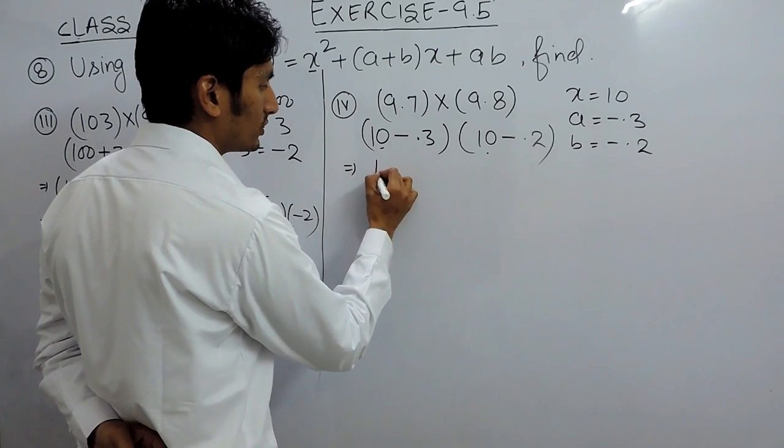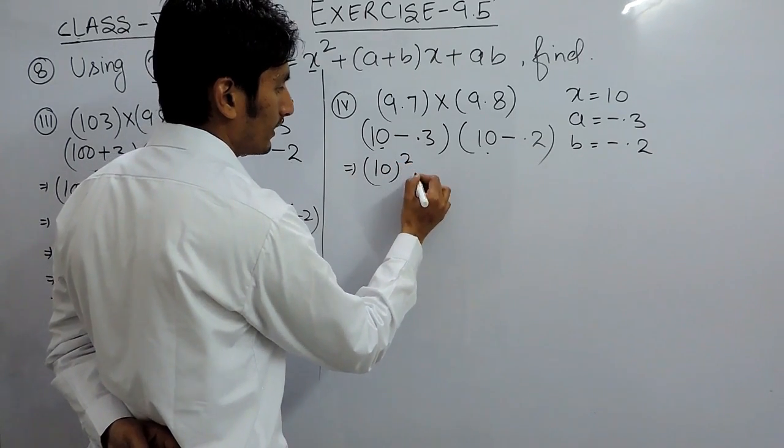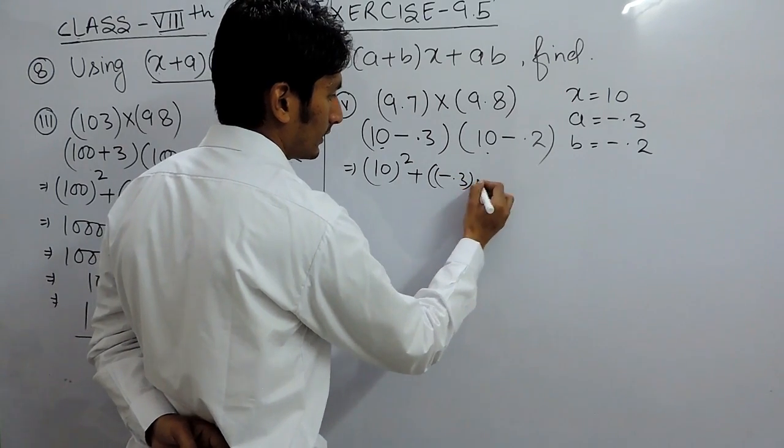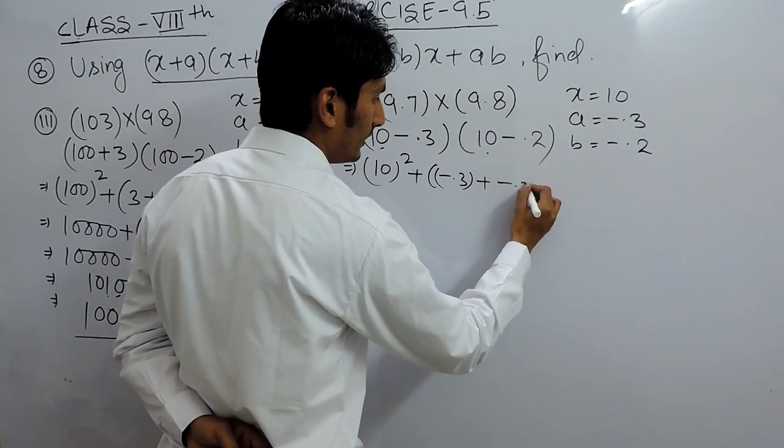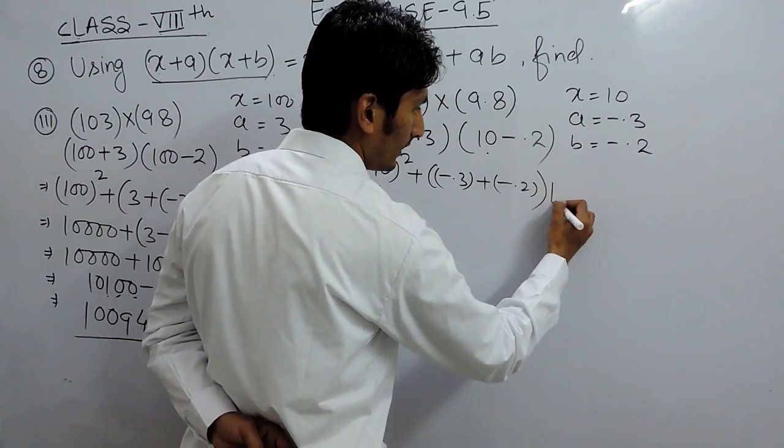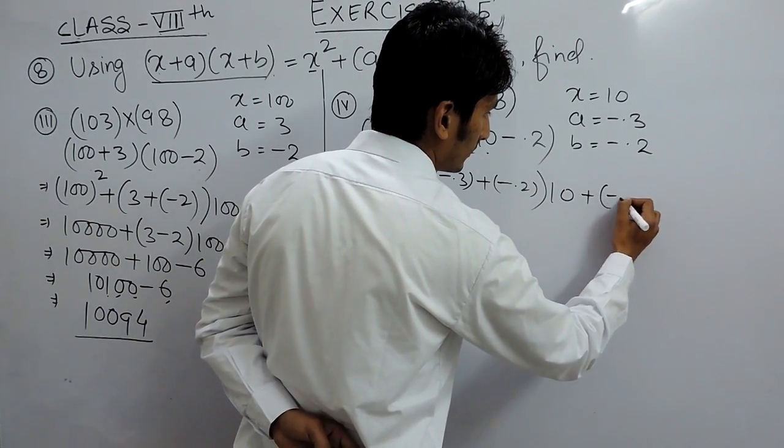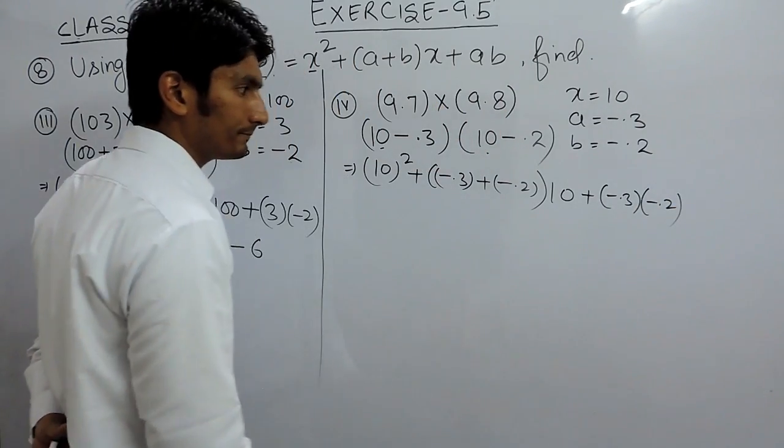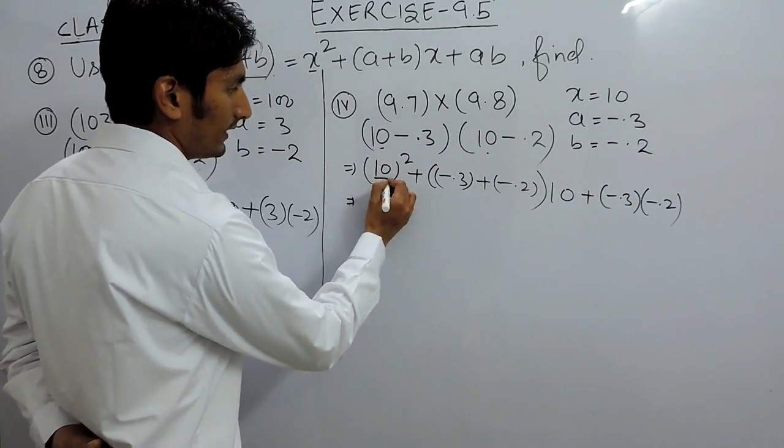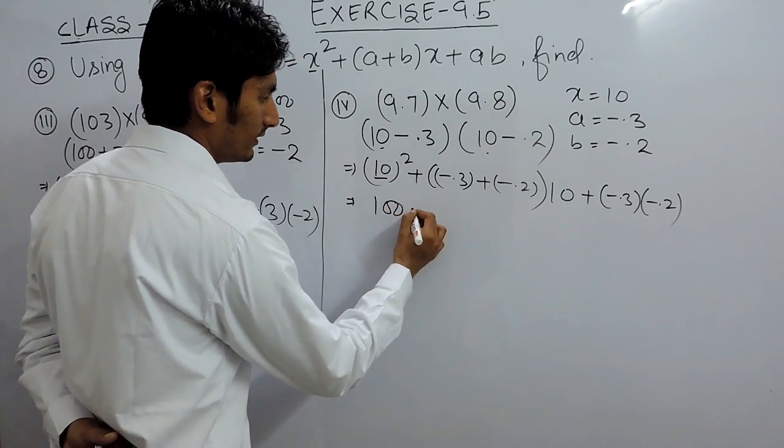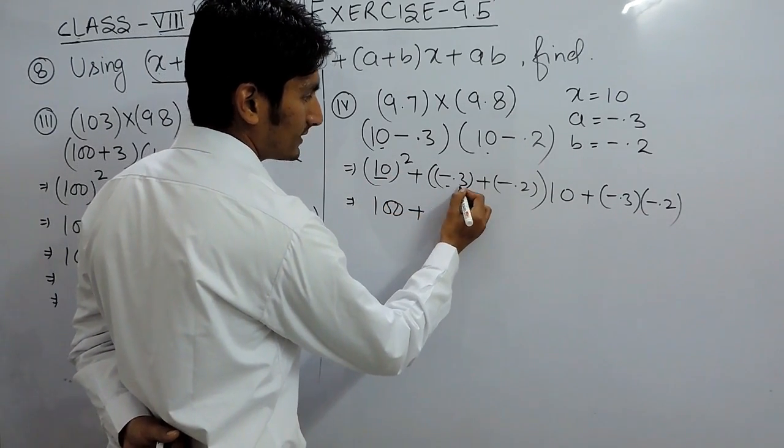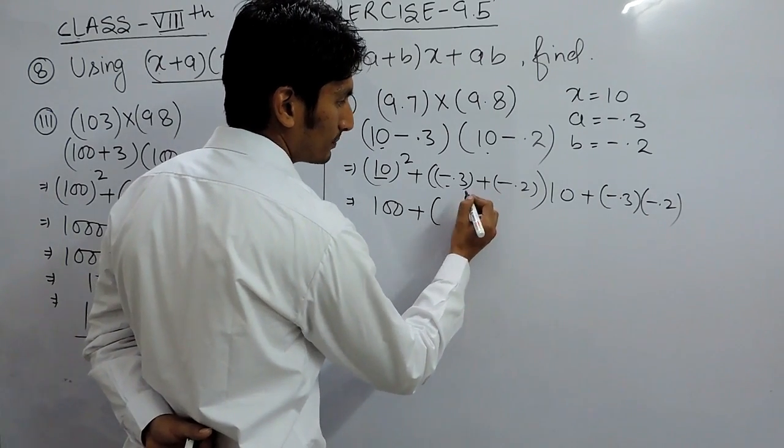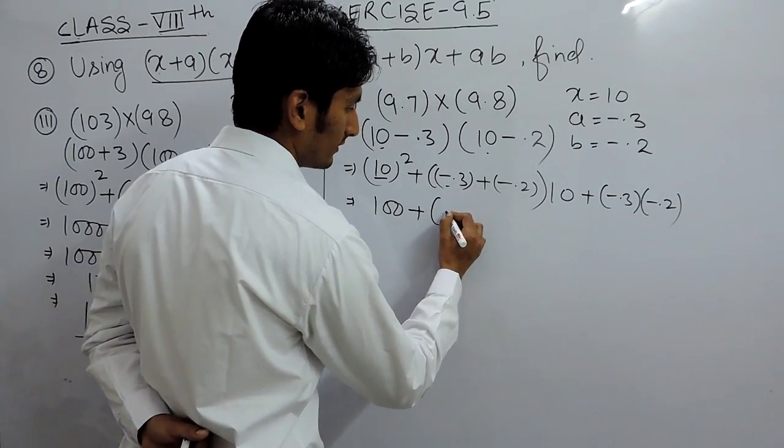Solving this, this should be equal to x squared plus (a plus b) times x plus a times b. 10 squared is 100. This is minus and again this will become minus, so minus minus is plus. 0.3 plus 0.2 is 0.5.